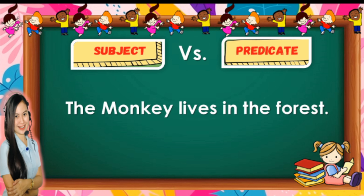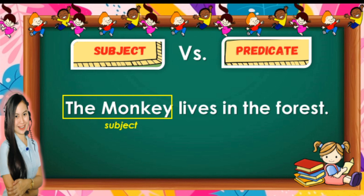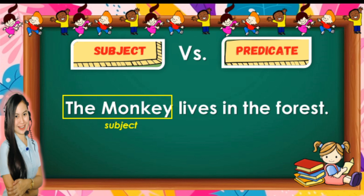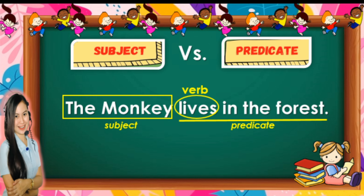Alright! Let's find our subject. Where is the subject in this sentence? Who or what is the sentence about? The subject is 'the monkey.' Very good! Now let's find the predicate. Always remember that the predicate usually begins with a verb. The word 'lives' is a verb. That's why our predicate is 'lives in the forest.'